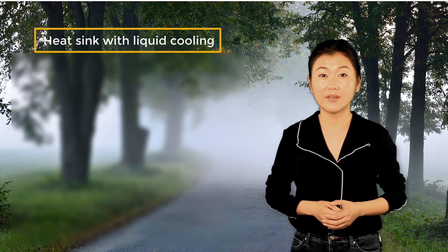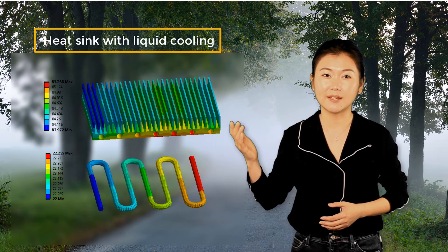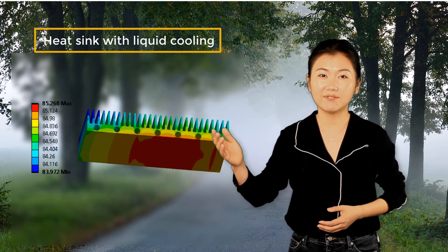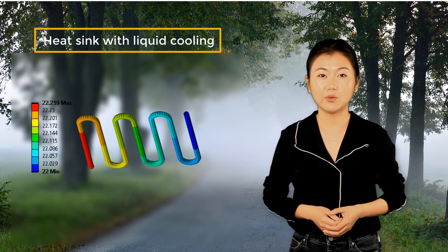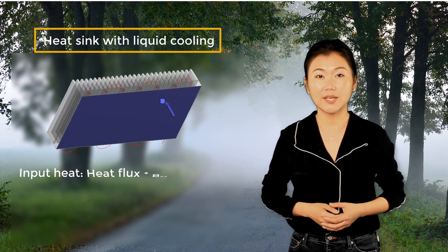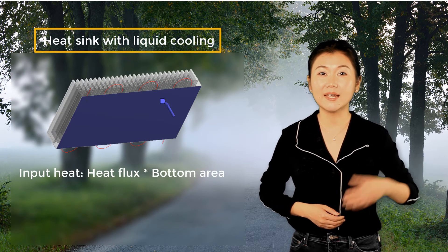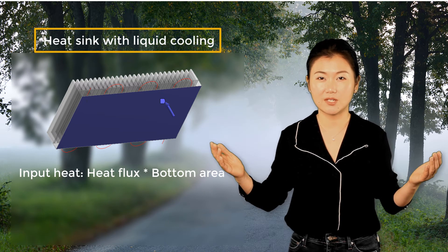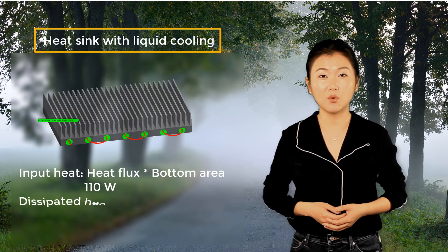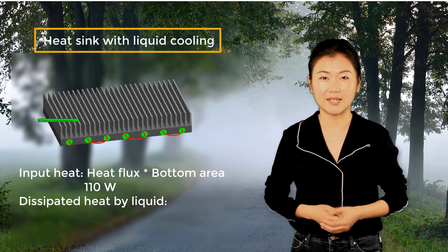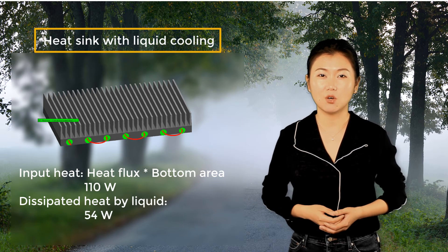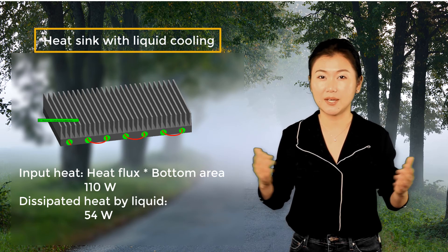Running the simulation will give us the following temperature distribution on the heat sink and the fluid. The overall temperature on the heat sink is around 85 degrees Celsius. The temperature of the liquid is gradually increased as it flows through the passageway. We can find the input heat of the system by multiplying the heat flux input and the area of the bottom surface, which turns out to be 110 watts. If we do a probe on the convection boundary condition between the fluid and the heat sink, we can see that the energy rate the liquid takes away is 54 watts. So a great amount of the energy is dissipated by the liquid cooling.